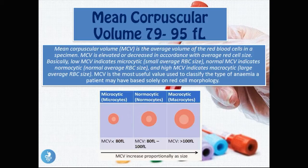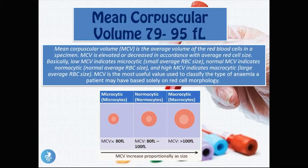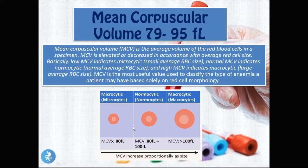The mean corpuscular volume is a very useful tool used to classify the type of anemia a patient has, based solely on red blood cell morphology. The normal value is 79 to 95. The values I've given throughout this presentation are from the local clinic I work at, so these values will differ from hospital to hospital. A textbook example showed 80 to 100 as the normal range — not far off.